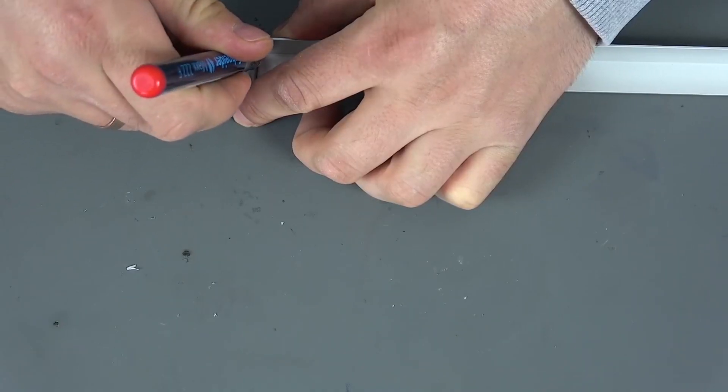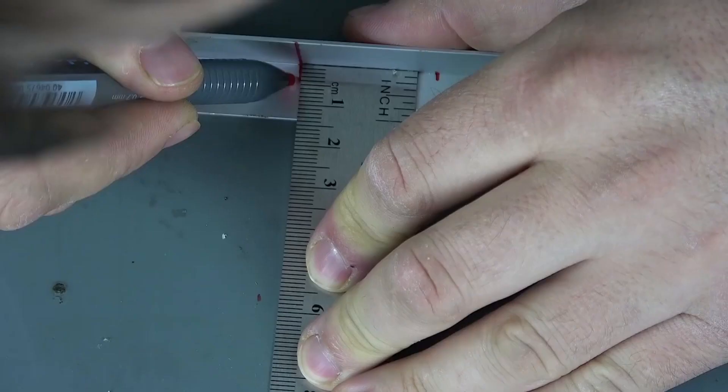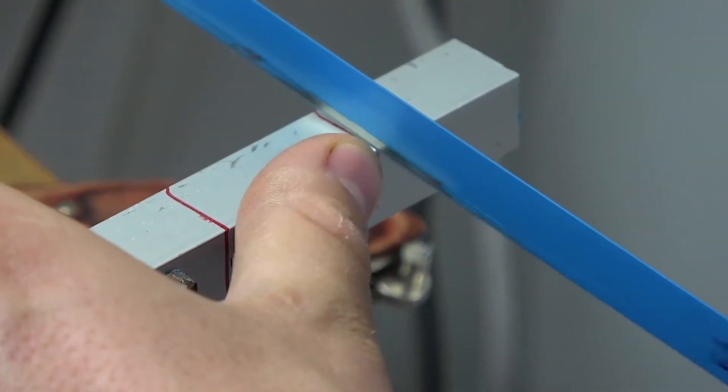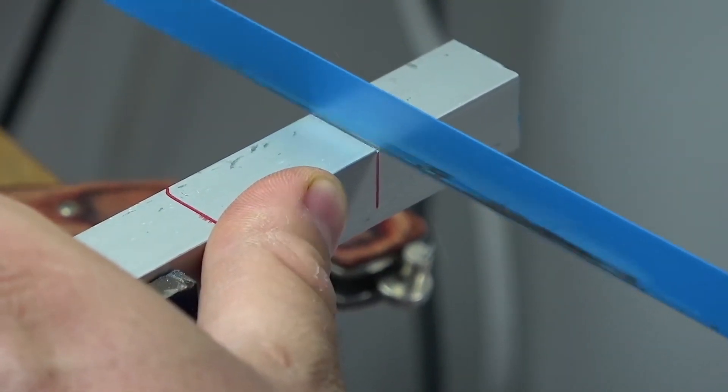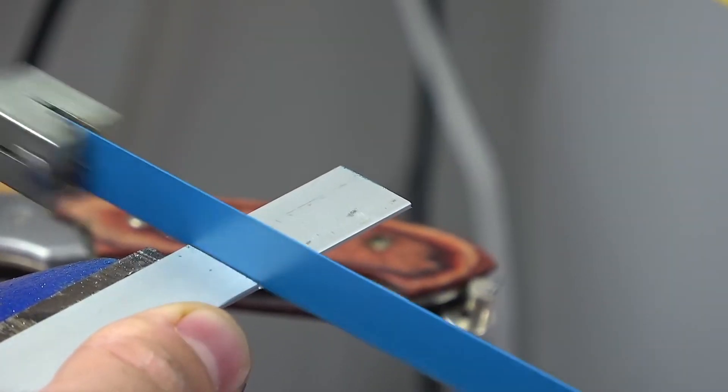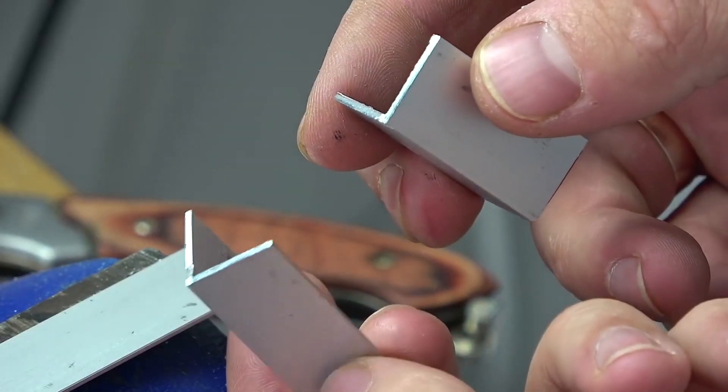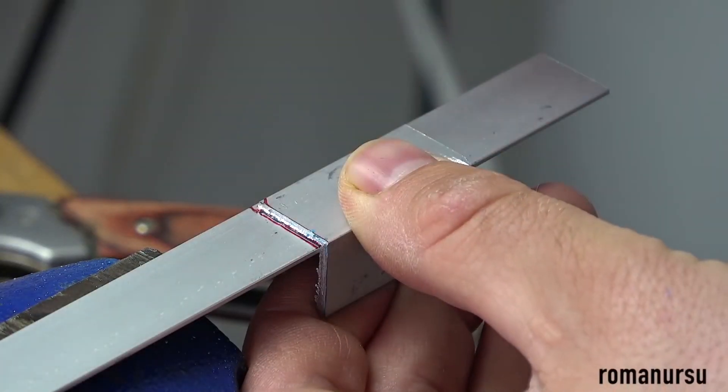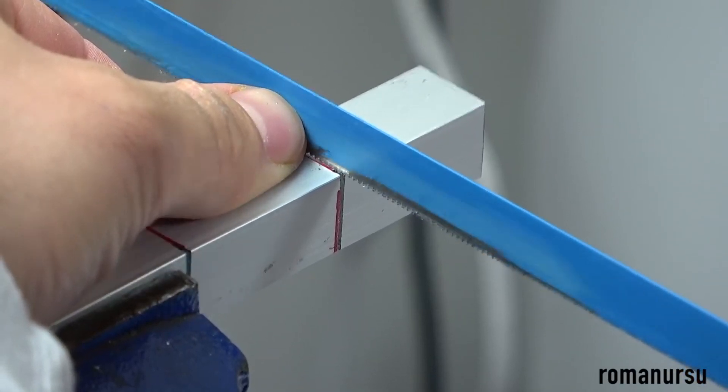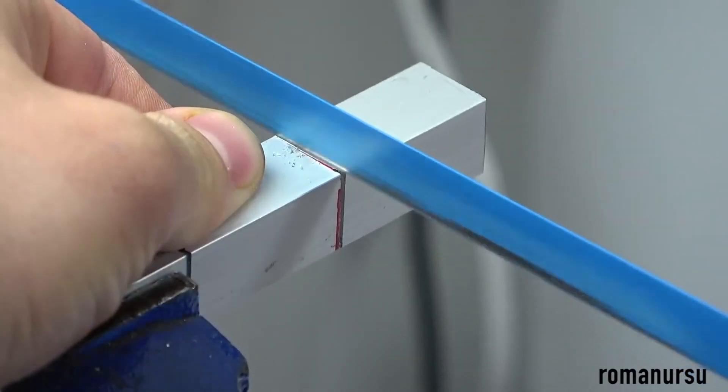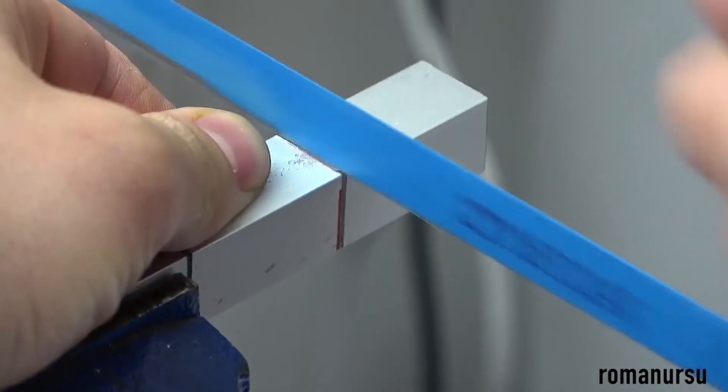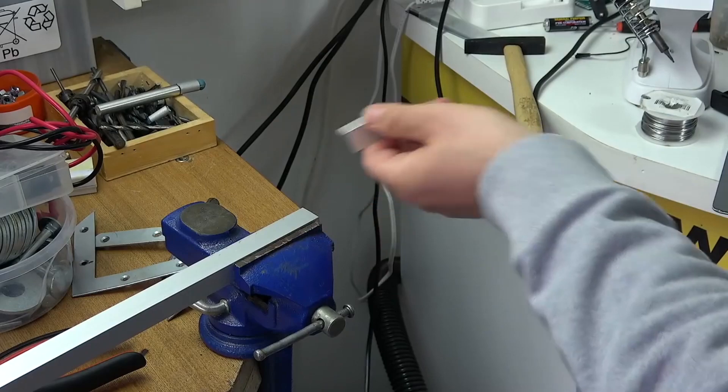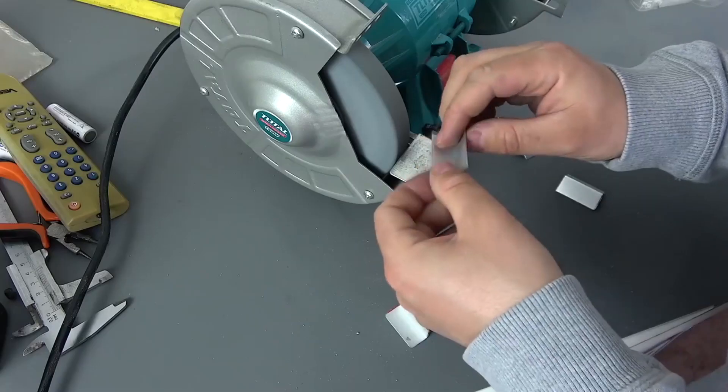Now we cut 5 pieces of aluminum profile with a length of 3 cm and slightly round the corners.